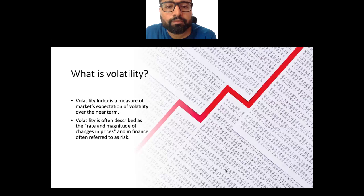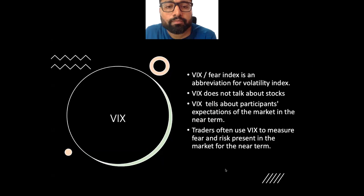The volatility index shows some perception about the future period — whether the market will increase or decrease. VIX, the fear index, is an abbreviation for Volatility Index, which does not talk about stocks but tells about participants' expectations of the market in the near term. Traders often use VIX to measure fear and sentiment in the market for the near future.